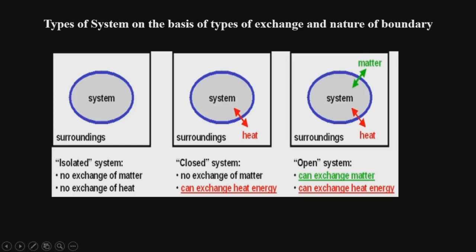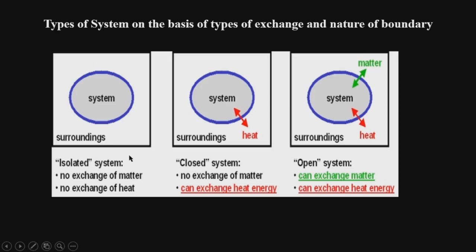On the basis of type of energy exchange and the nature of boundary, systems are divided into isolated, closed, and open systems. An isolated system is one that can neither exchange energy nor matter with the surroundings. For example, a thermos flask filled with hot water or hot tea can be considered as an isolated system.